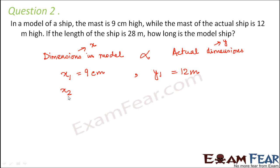What would be x2, that is how long is the model ship? That we do not know. But what would be y2? The actual length of the ship is 28 meters. So this is 28 meters. Now we also need to ensure that all of these are in the same units. So 9 cm is 9 by 100 meters. As per the relationship, it is x1 by y1 is equal to x2 by y2.